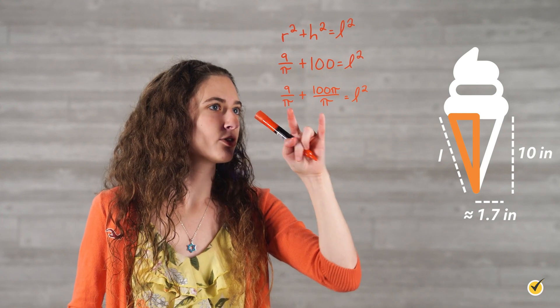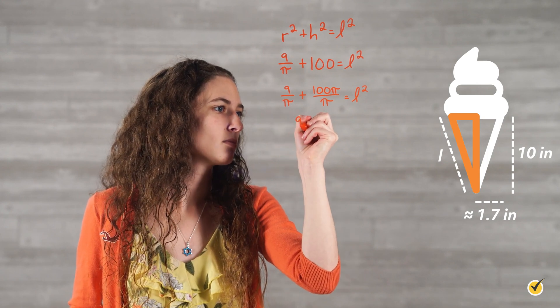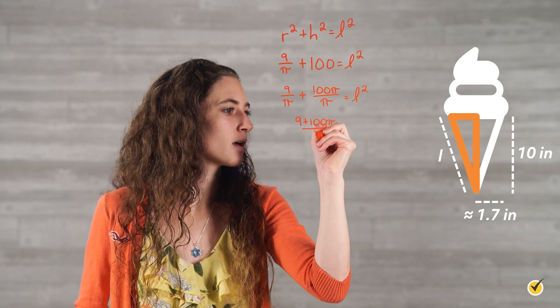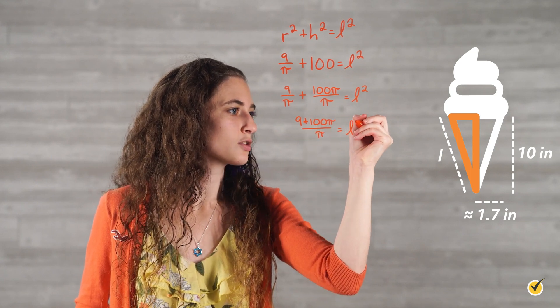Now, we have the same denominator in both our fractions, so we can add them like normal. 9 plus 100 pi over pi equals l squared.